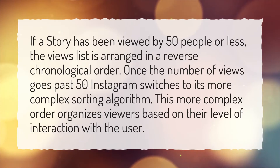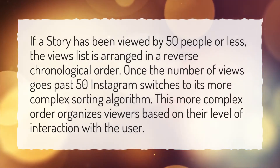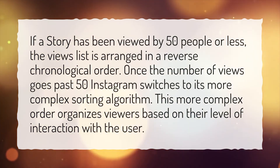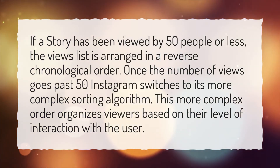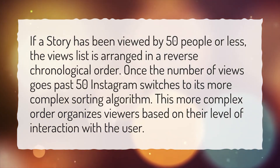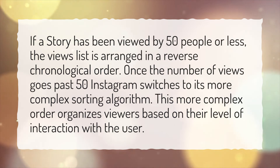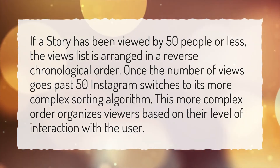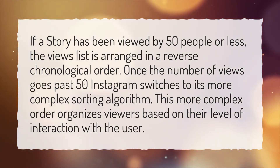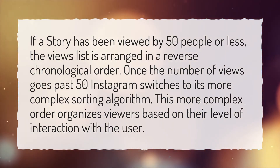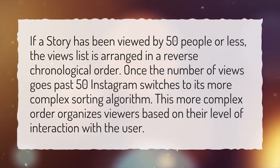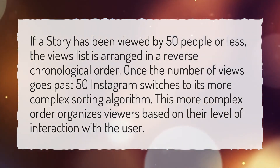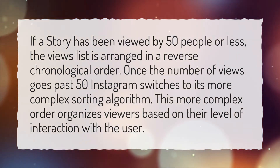If a story has been viewed by 50 people or less, the views list is arranged in reverse chronological order. Once the number of views goes past 50, Instagram switches to its more complex sorting algorithm, which organizes viewers based on their level of interaction with the user.